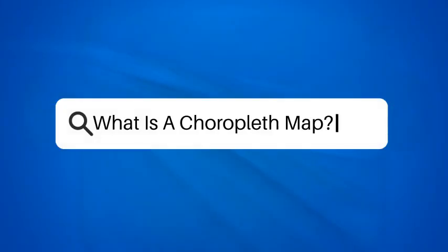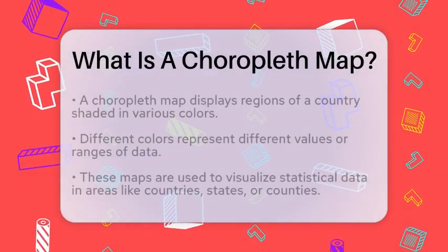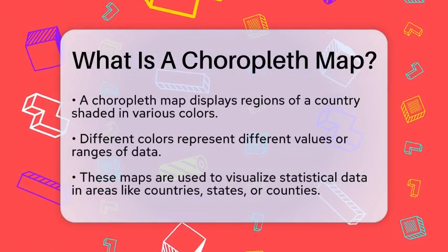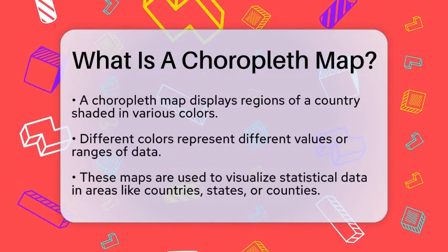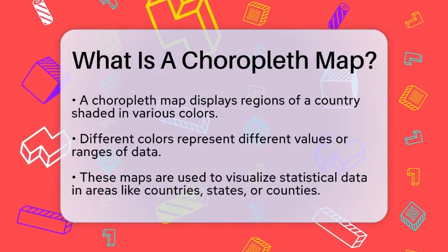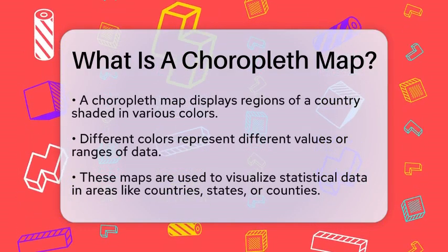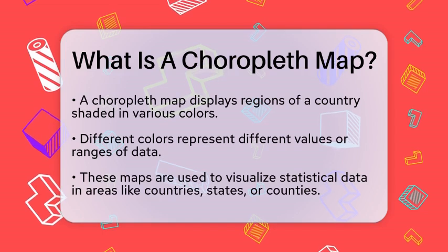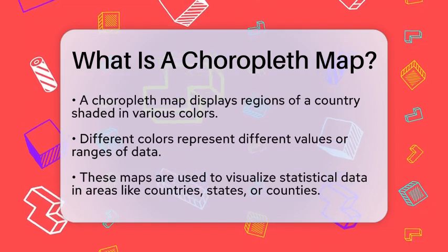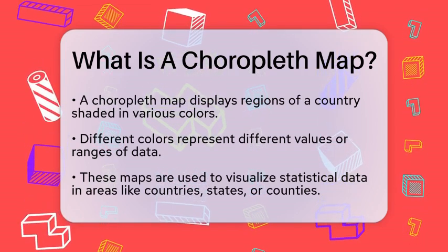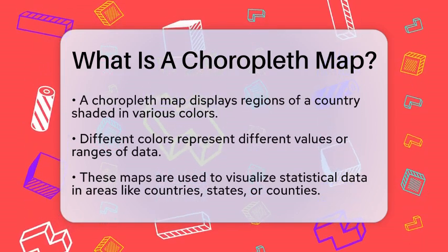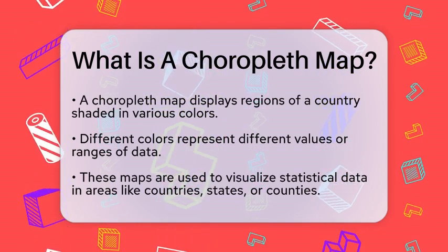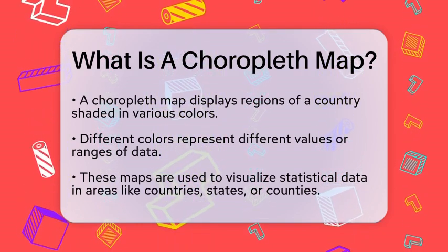What is a choropleth map? Imagine you are looking at a map that shows different regions of a country, and each area is shaded in various colors. Some regions might be dark blue, while others are light green. What you are seeing is a representation of data that is visually appealing and informative. This type of map is known as a choropleth map.